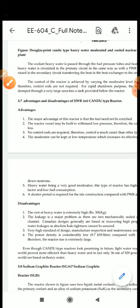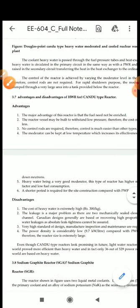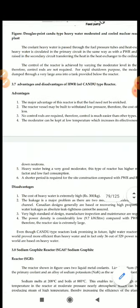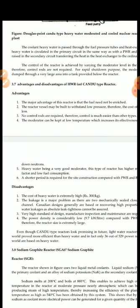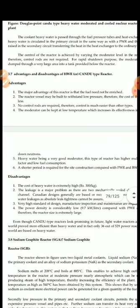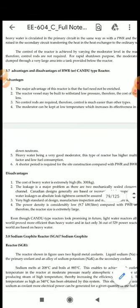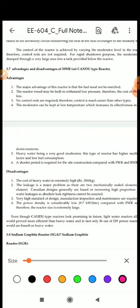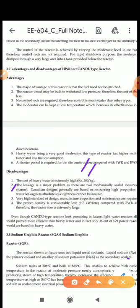Now if we see the disadvantages, the disadvantages are as follows: The first disadvantage is the cost of heavy water is extremely high. It is almost around 300 rupees per kg.